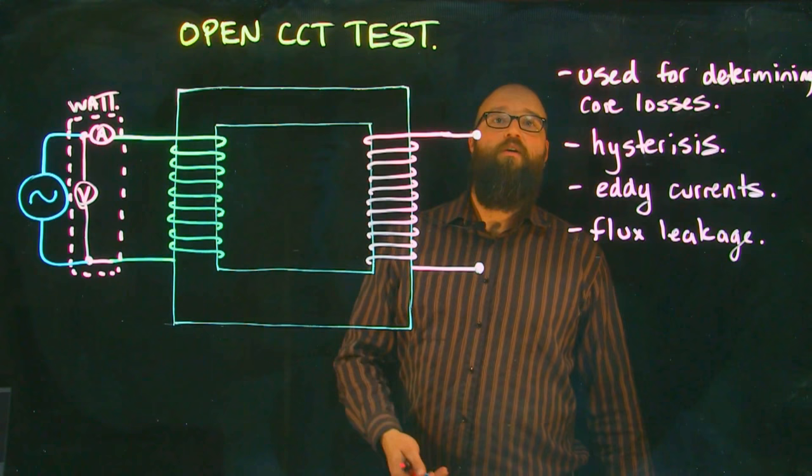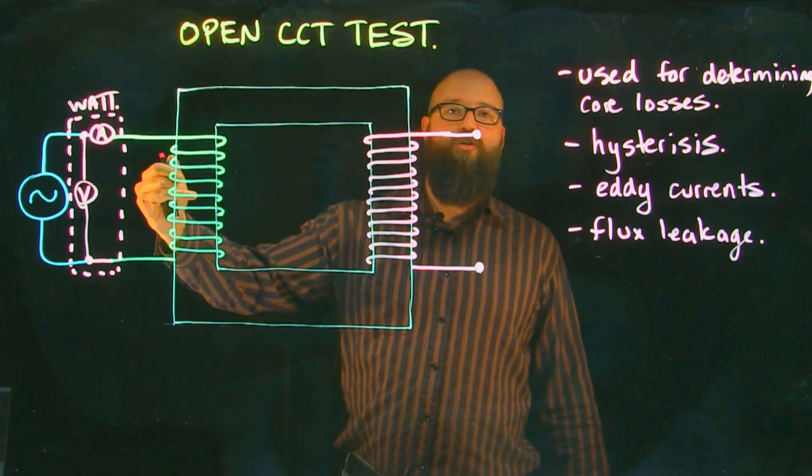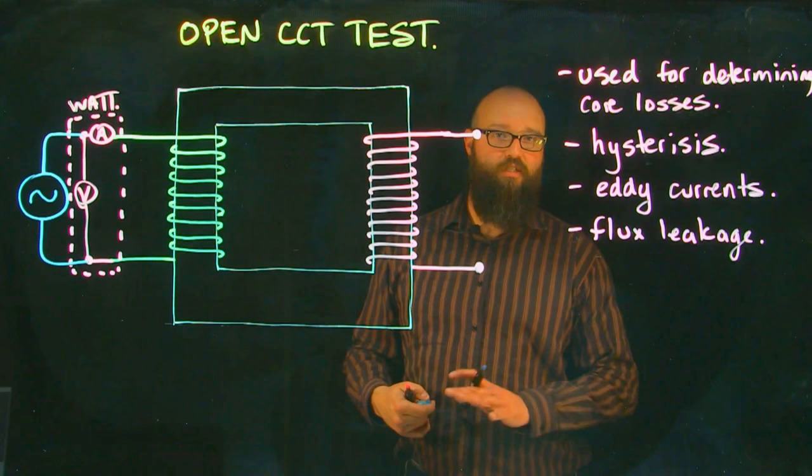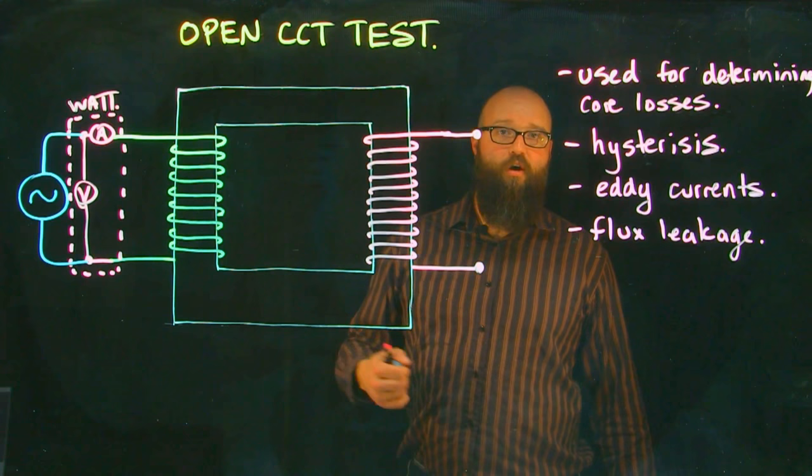Now one thing to remember: core losses are not dictated by loading or unloading our transformer. So as the current goes up in the secondary, through transformer action it will increase the current on our primary as well. That does not affect core losses. Core losses are steady throughout. Copper losses are affected by increasing or decreasing load, but not our physical core losses.